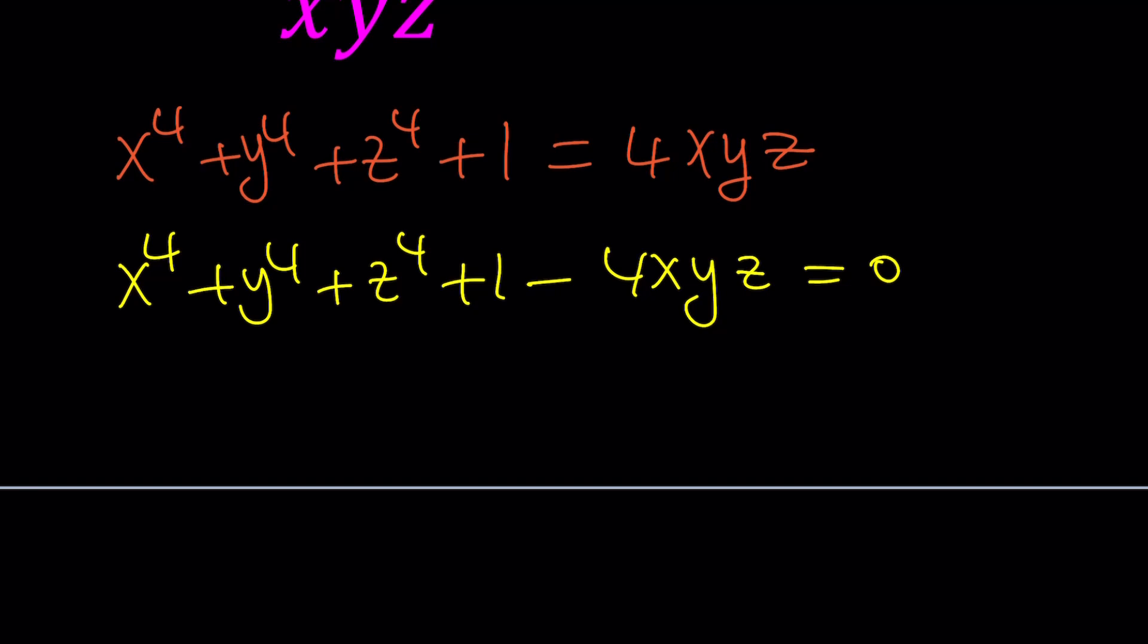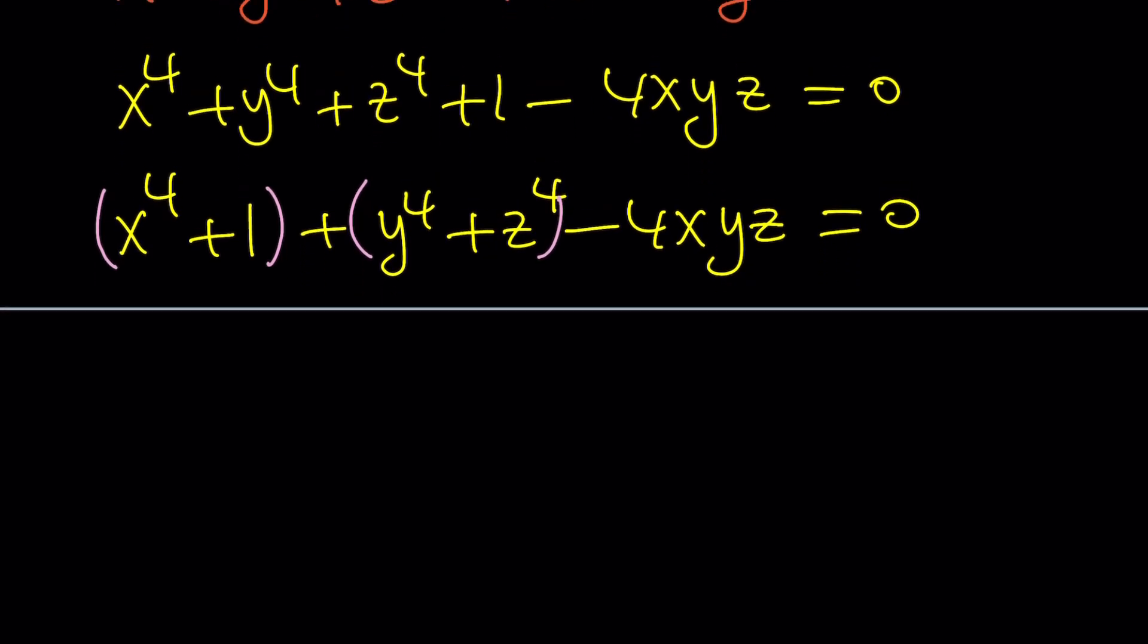Here's what I'm going to do. I'm going to put the 1 with the x to the 4th, and put the y to the 4th with z to the 4th. Put those two together. And then subtract 4xyz equals 0. So here's my goal. I would like to put these two together and put these two together, and then come up with some type of perfect square from there. Now, think about it. I have x to the 4th and 1, so I kind of have a squared and b squared. I need 2ab. Remember, a squared plus b squared plus 2ab is a plus b squared.